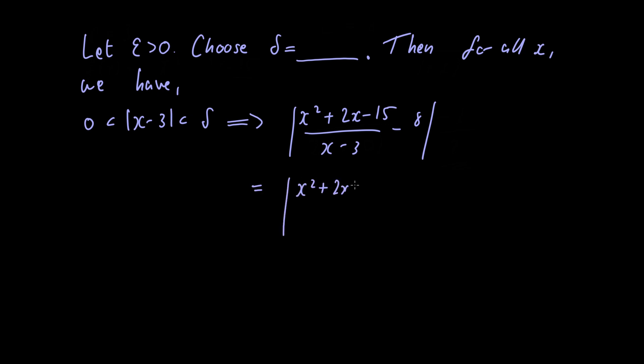Which we can rewrite as x squared plus 2x minus 15 minus 8x plus 24 divided by x minus 3, which is equal to x squared minus 6x plus 9 divided by x minus 3.